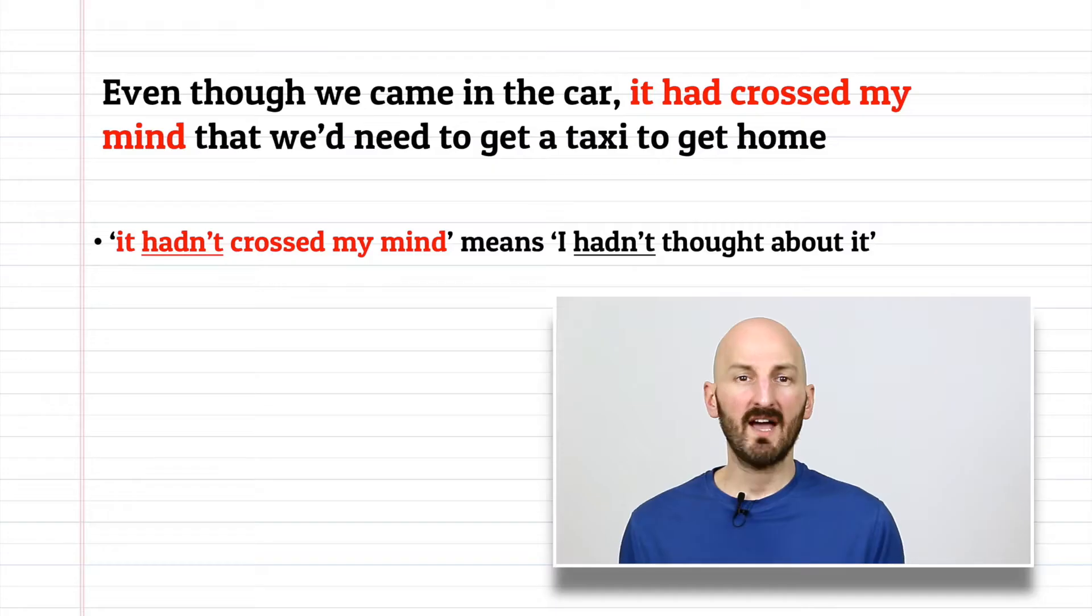Next, it hadn't crossed my mind. This is a simple expression that means, I hadn't thought about it. You can use the positive or negative form on this one. Another example is, even though we came in the car, it had crossed my mind that we'd need to get a taxi to get home.